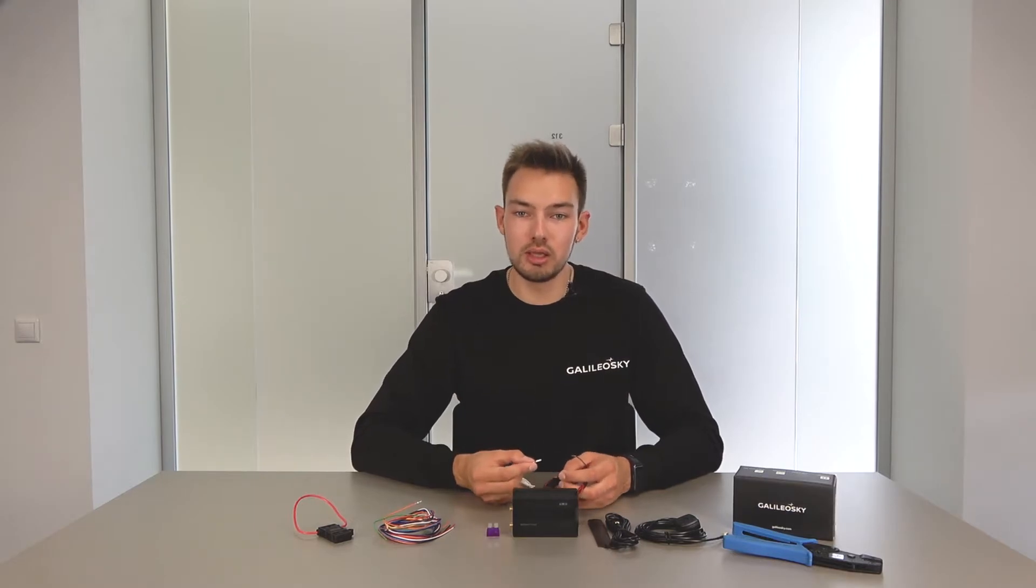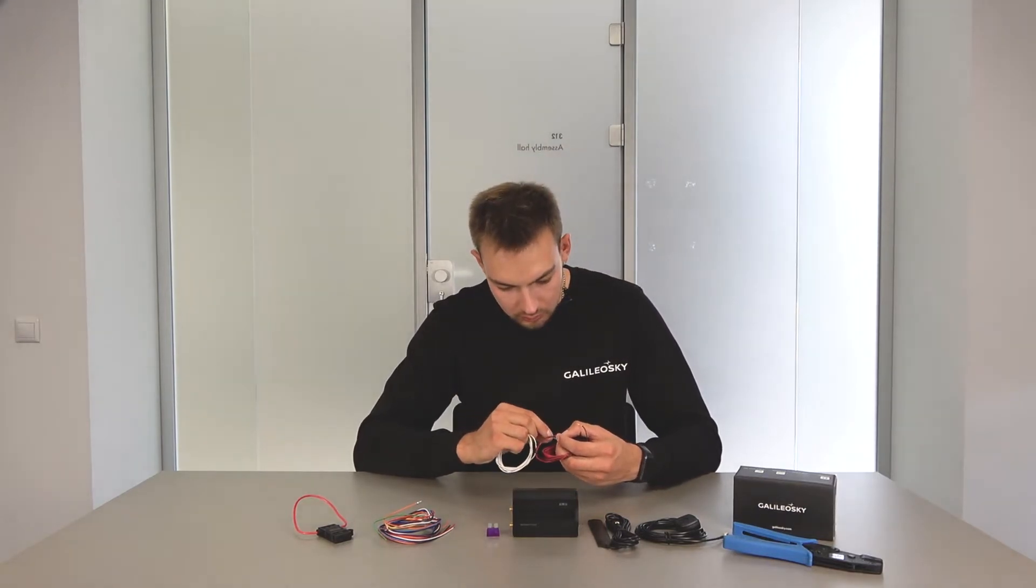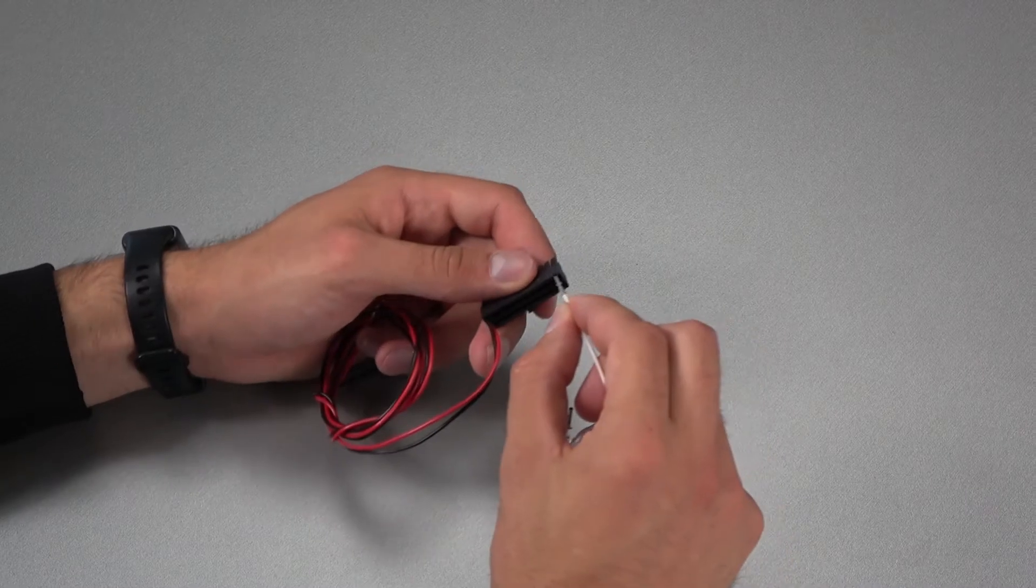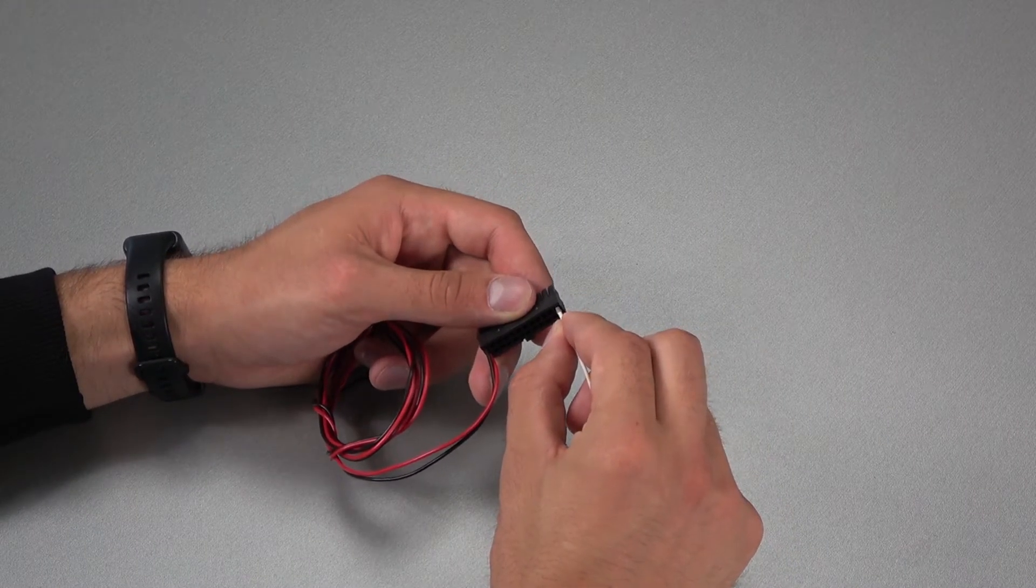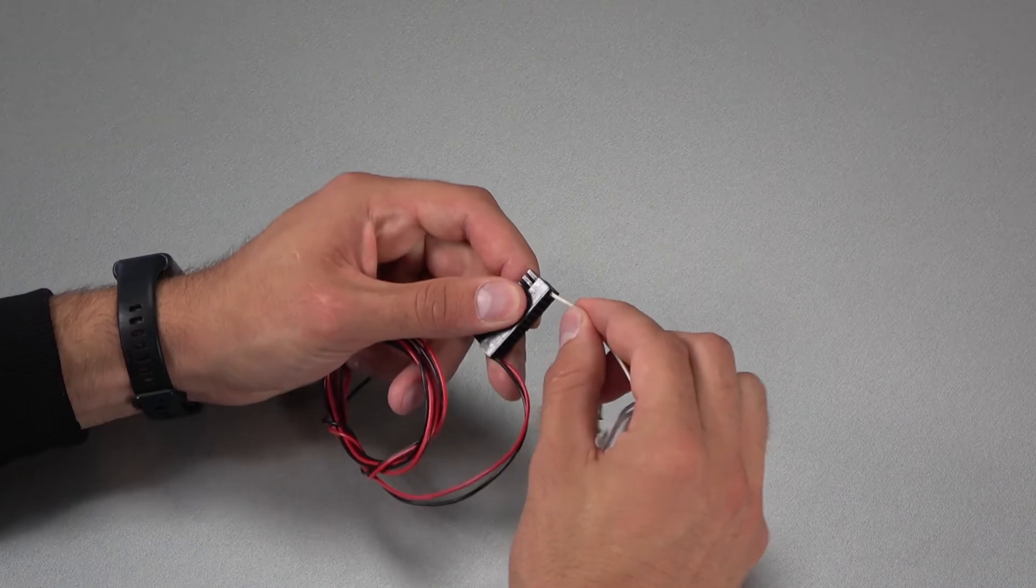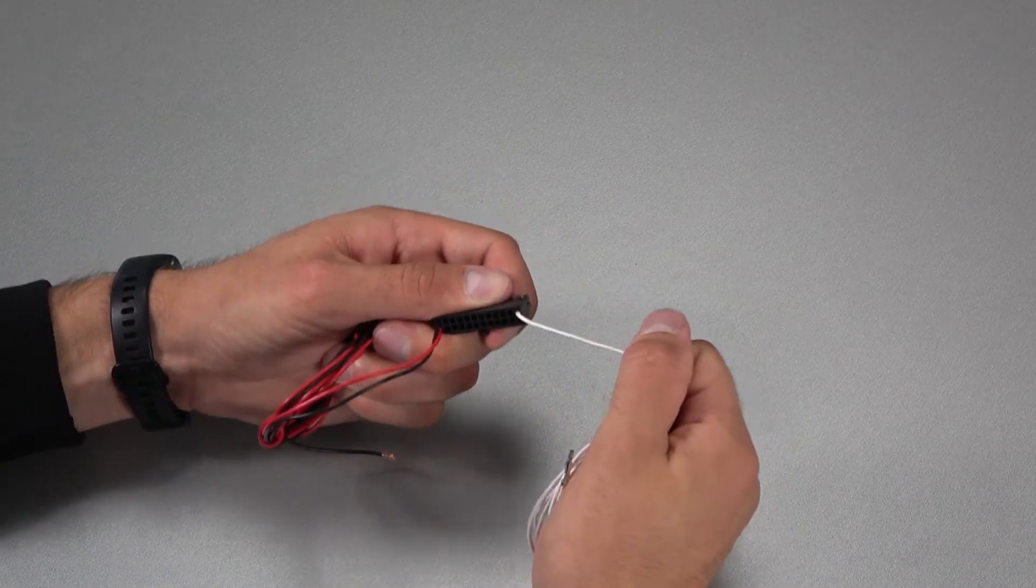Now install the crimped wire into the block. To do this, insert the wire into the connector from the wider side until it stops. If everything is done correctly, you won't remove the wire from the block without breaking it.